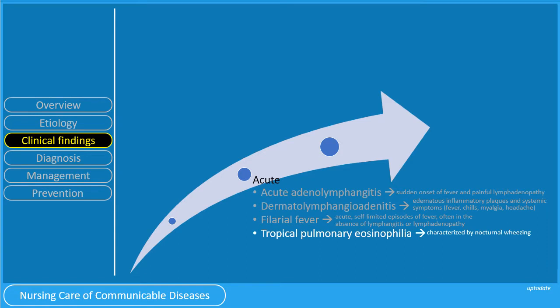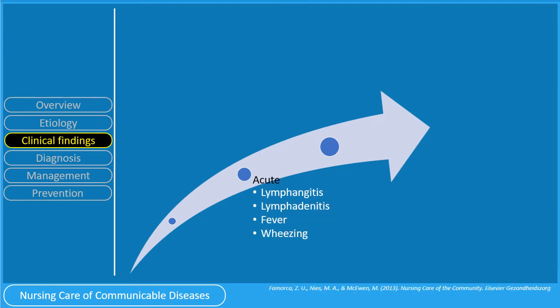Tropical pulmonary eosinophilia is caused by immune hyperresponsiveness to microfilaria trapped in the lungs and is characterized by nocturnal wheezing. To oversimplify: filariasis presents acutely with lymphangitis, lymphadenitis, fever, and wheezing. Lymphangitis is the inflammation of the lymphatic channels while lymphadenitis is the inflammation of the lymph nodes.